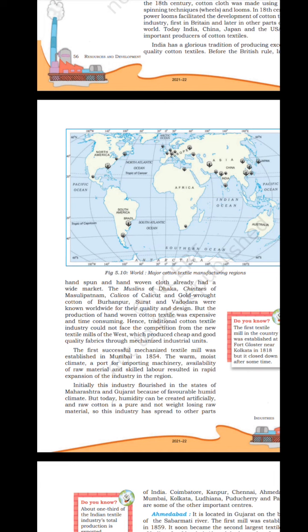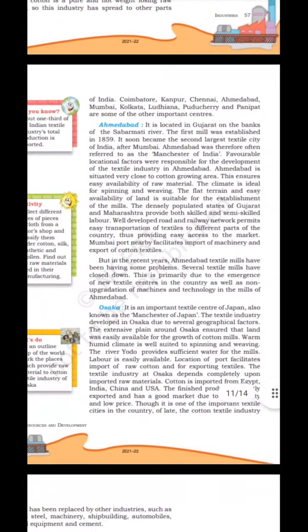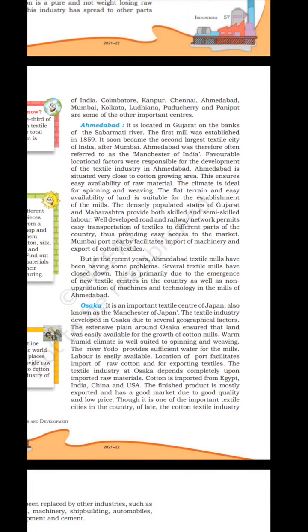The first textile mill in the country was established at Fort Gloucester near Kolkata in 1818 but closed down after some time. The industry flourished in Maharashtra and Gujarat because of the favourable humid climate. Today humidity can be created artificially and raw cotton is a pure, non-weight-losing raw material, so the industry has spread to other parts of India — Coimbatore, Kanpur, Chennai, Ahmedabad, Mumbai, Kolkata, Ludhiana, Puducherry and Panipat are some other important centres.